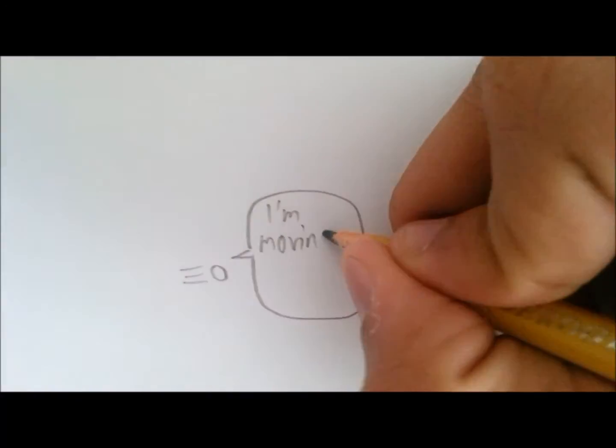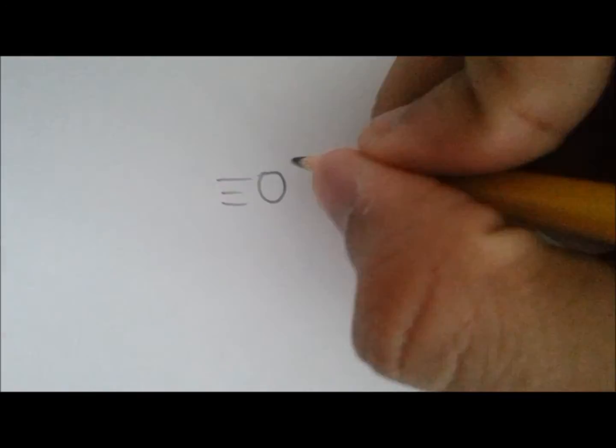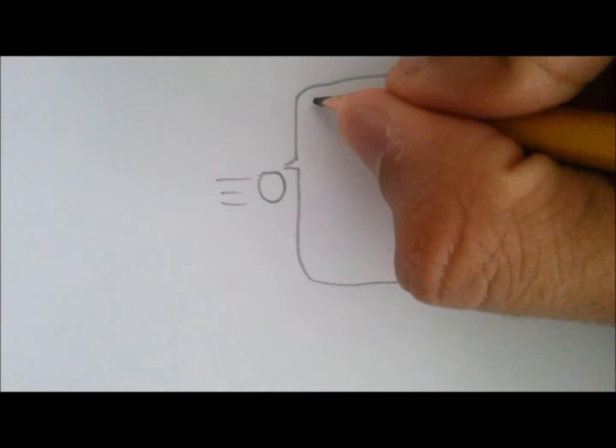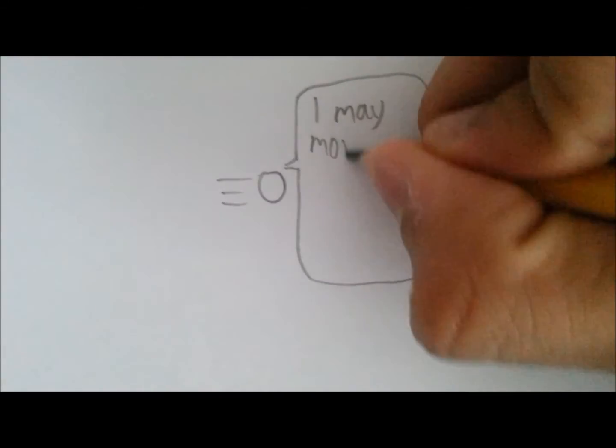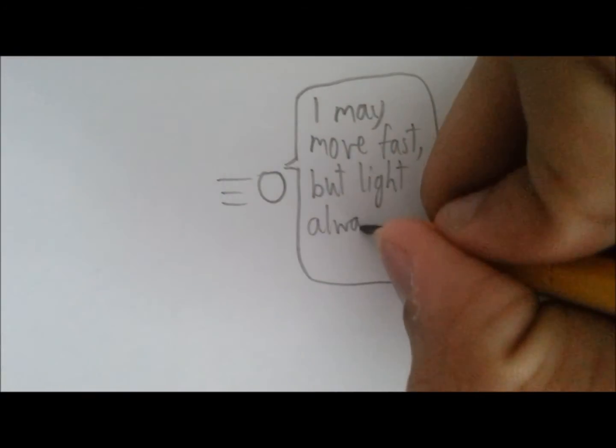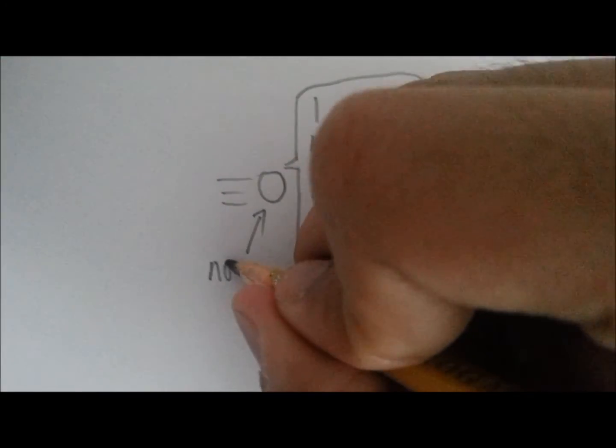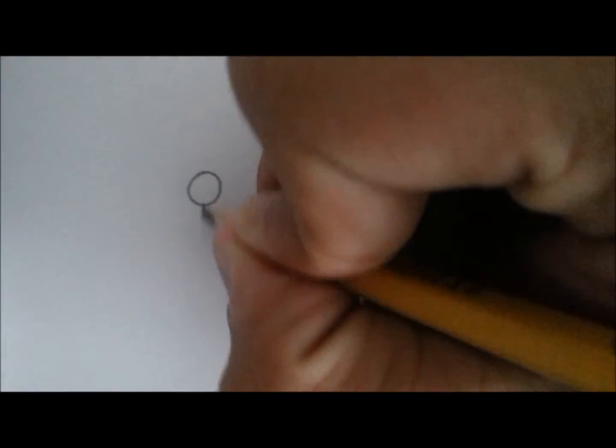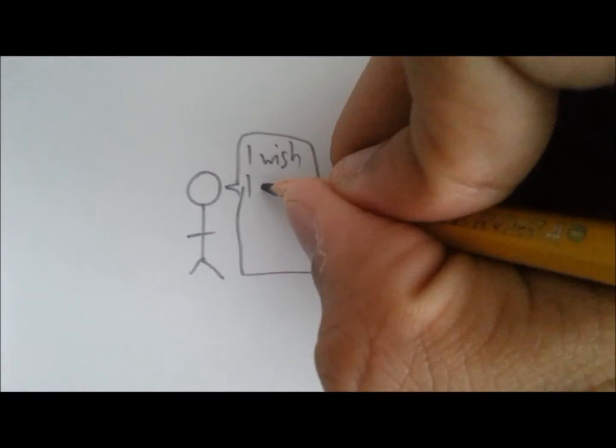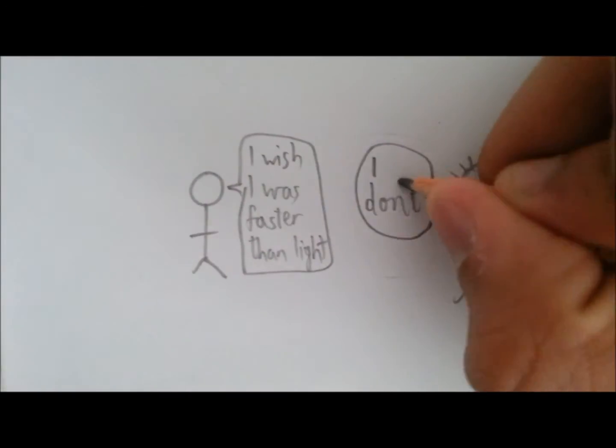This means that no object can move at speeds greater than the speed of light. No matter what particle is moving, the speed of light is the cosmic speed limit. So far, no particles have been observed to exceed the speed of light, but if anything ever moves faster than the speed of light, the laws of time dilation and length contraction will just completely break down, and physicists will be left scratching their heads. But for now, Einstein is right, so we will have to accept the fact that we can never travel faster than the speed of light.